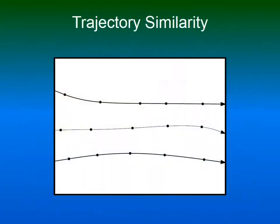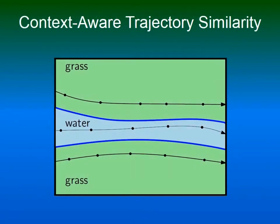Let us first discuss the general task of trajectory similarity in a geographic space. Looking only at the geometry of these three trajectories, they seem to be equally similar. But if one also takes into account their geographic context, then the two trajectories on land seem more similar. Therefore, we have developed a similarity measure that distinguishes trajectories by both their geometry and their geographic context.